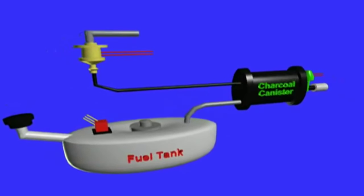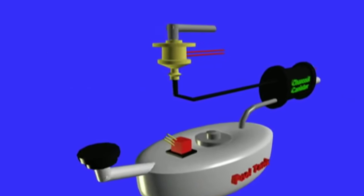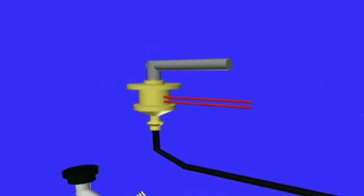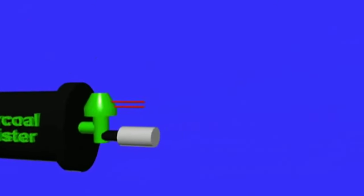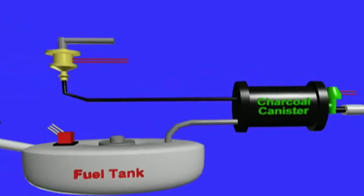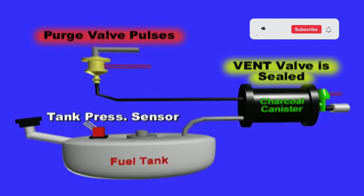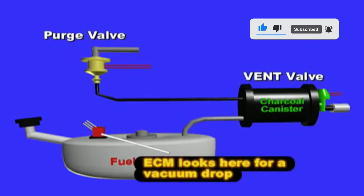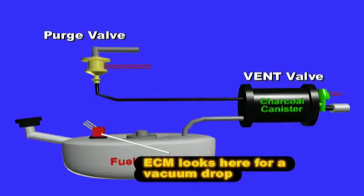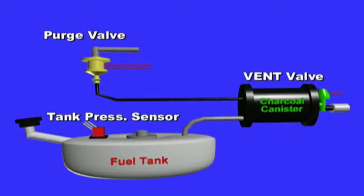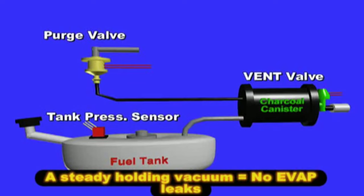The operation of the EVAP system involves the collection and storage of fuel vapors until the time comes for the engine to burn them. Starting the engine produces a vacuum that draws the stored vaporized fuel into the engine. The ECM sends a signal to the purge valve at the appropriate time to release the fuel vapors, managing their flow from the canister to the engine.